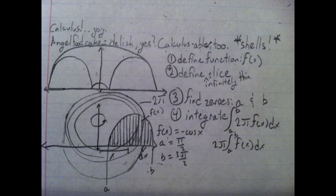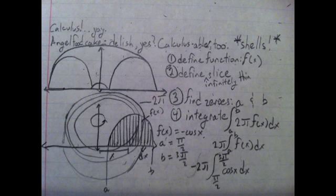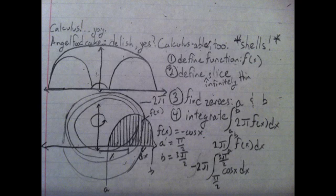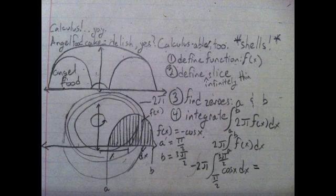If we set up our integral again, we can solve the original volume question. Negative 2π times the integral from π over 2 to 3π over 2 of cosine dx equals angel food goodness.